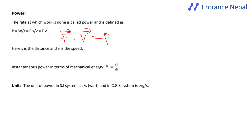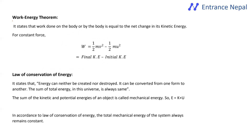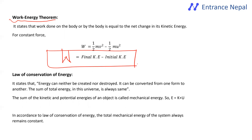Power equals force dot velocity (P = F·v). Instantaneous power is the derivative of energy with respect to time. The work-energy theorem states: work done by all forces equals the change in kinetic energy — i.e., final KE minus initial KE.